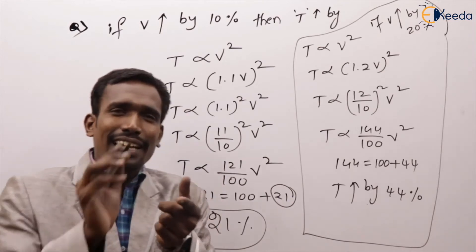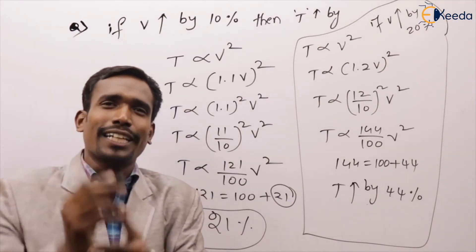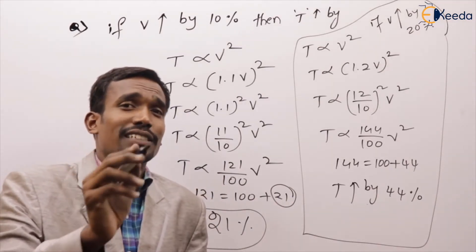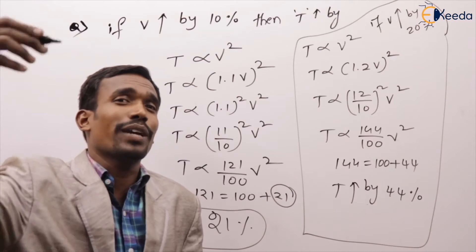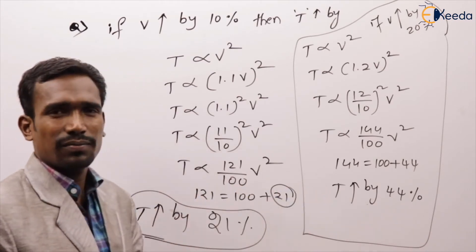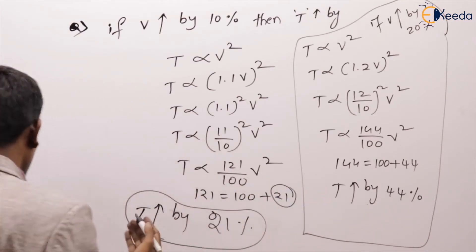We already calculated: eddy current loss is directly proportional to N squared. Brush frictional loss is also directly proportional to N squared. The answers are the same.